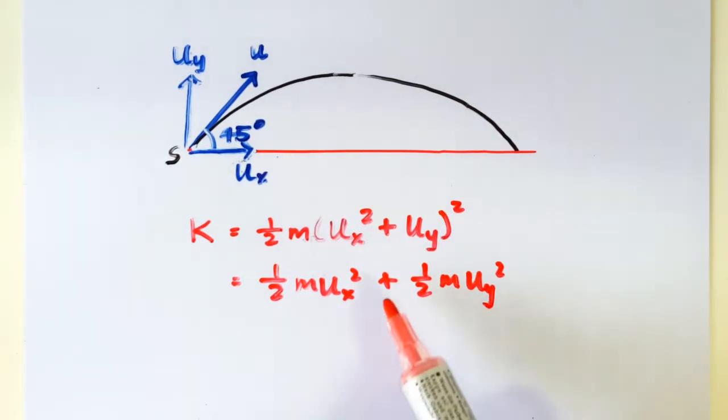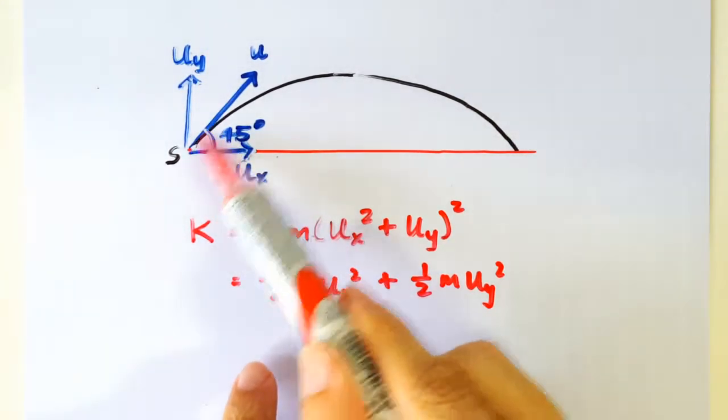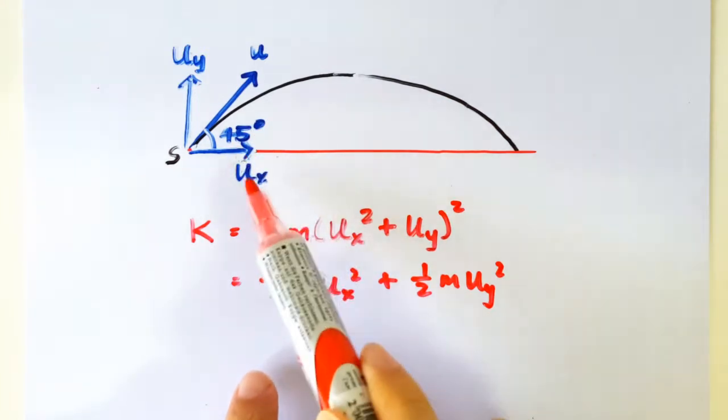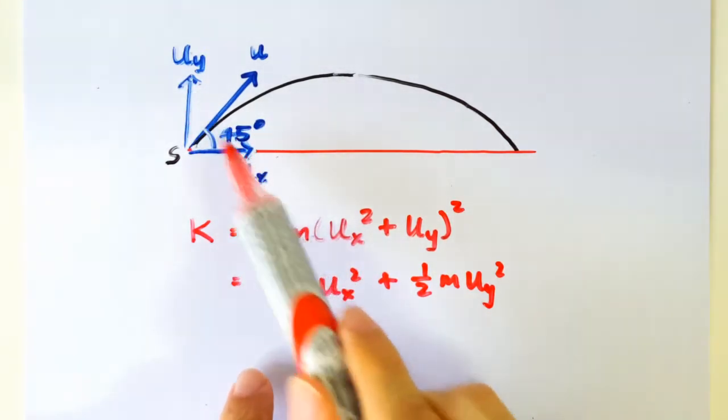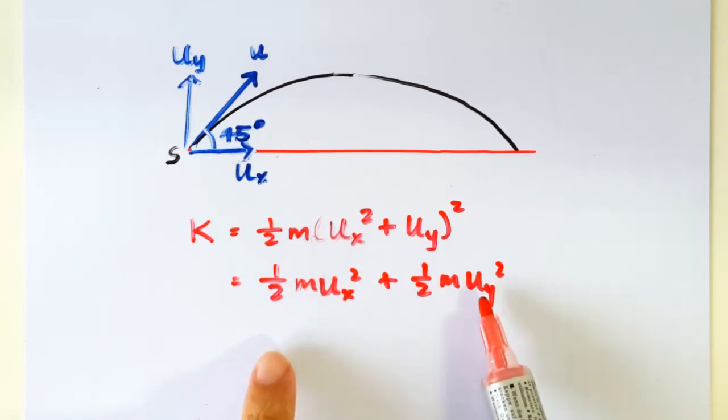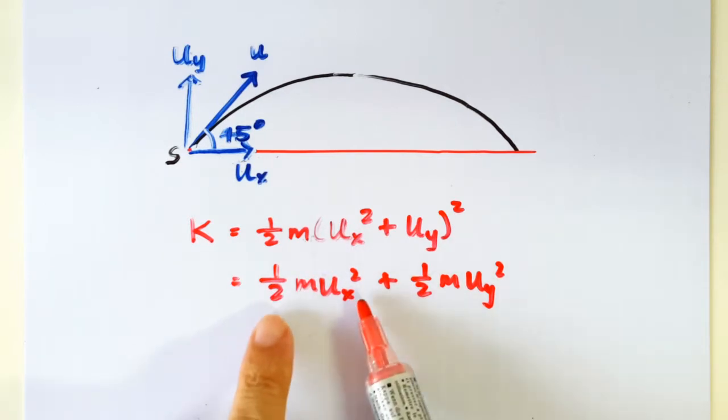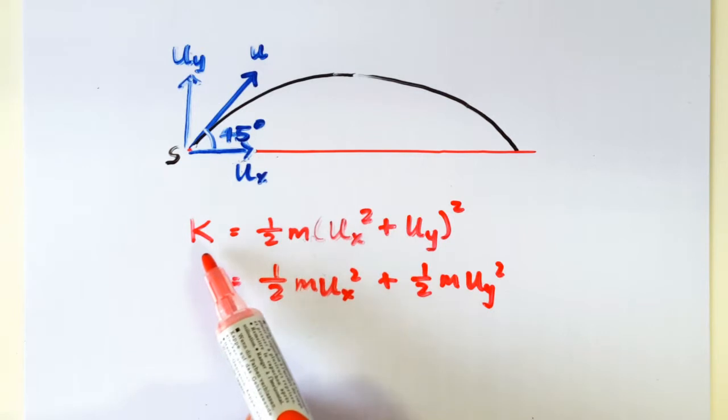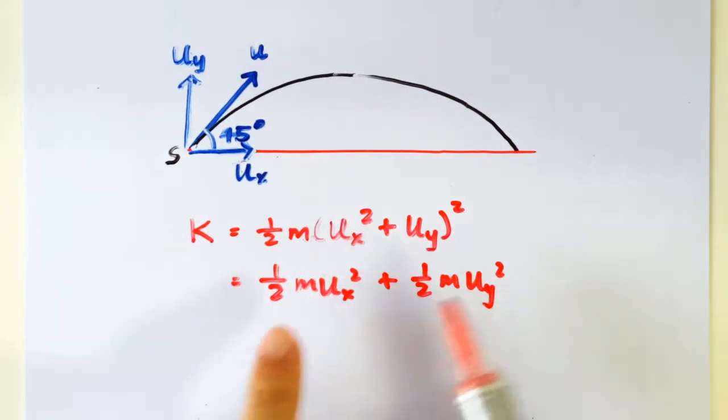The trick to this question is that it was launched at an angle of 45 degrees, so Ux and Uy are the same. Which means this term here and this term here are exactly the same. So that means that one term by itself is equal to half K. Get it? Because these two terms are exactly the same, so this must be K over 2 and this must be K over 2.